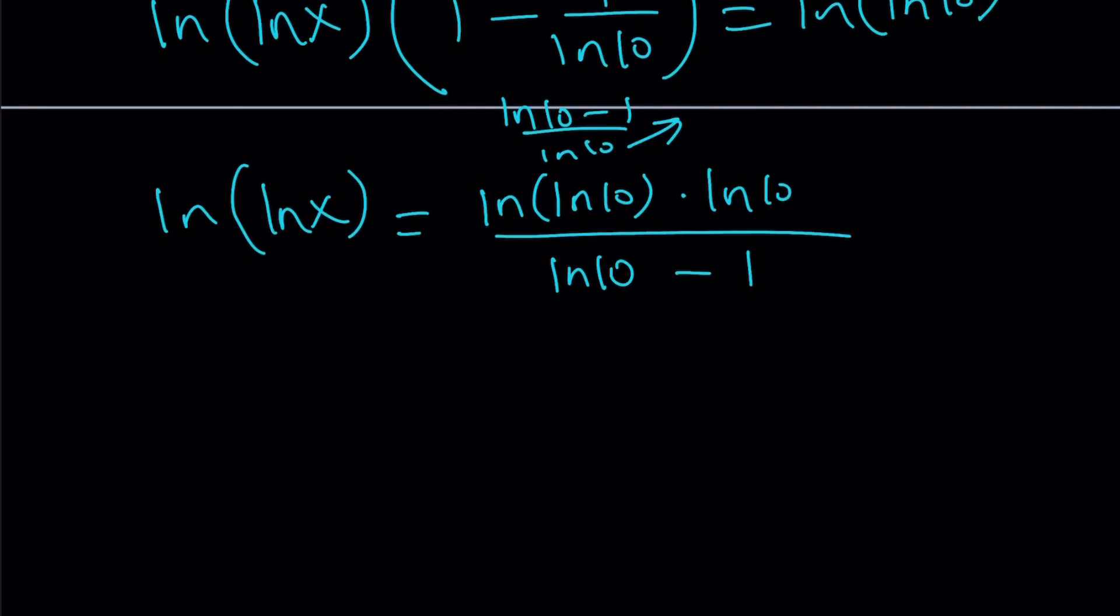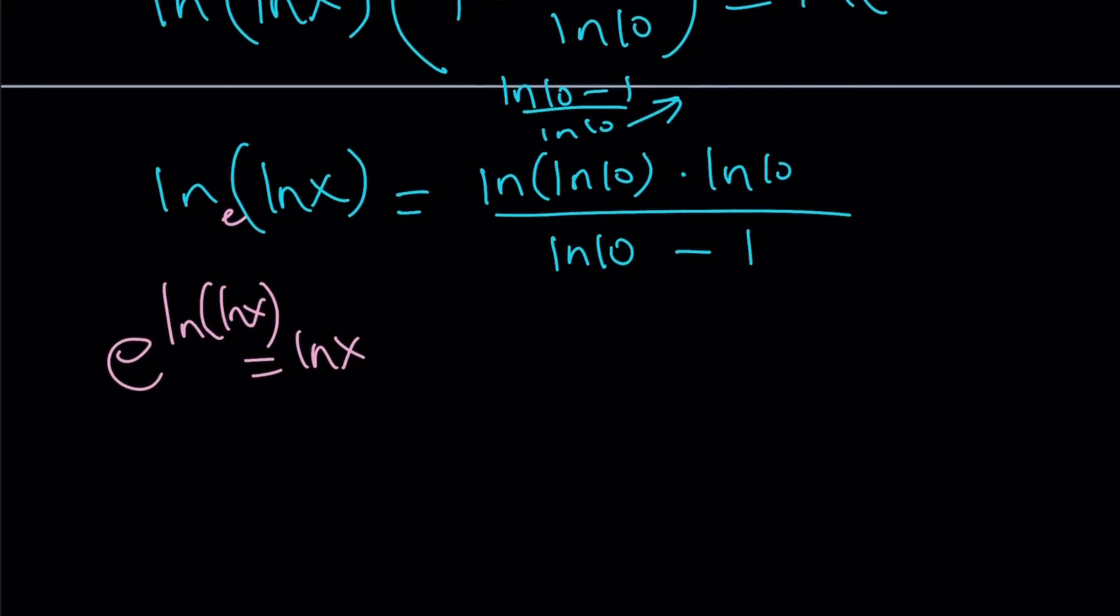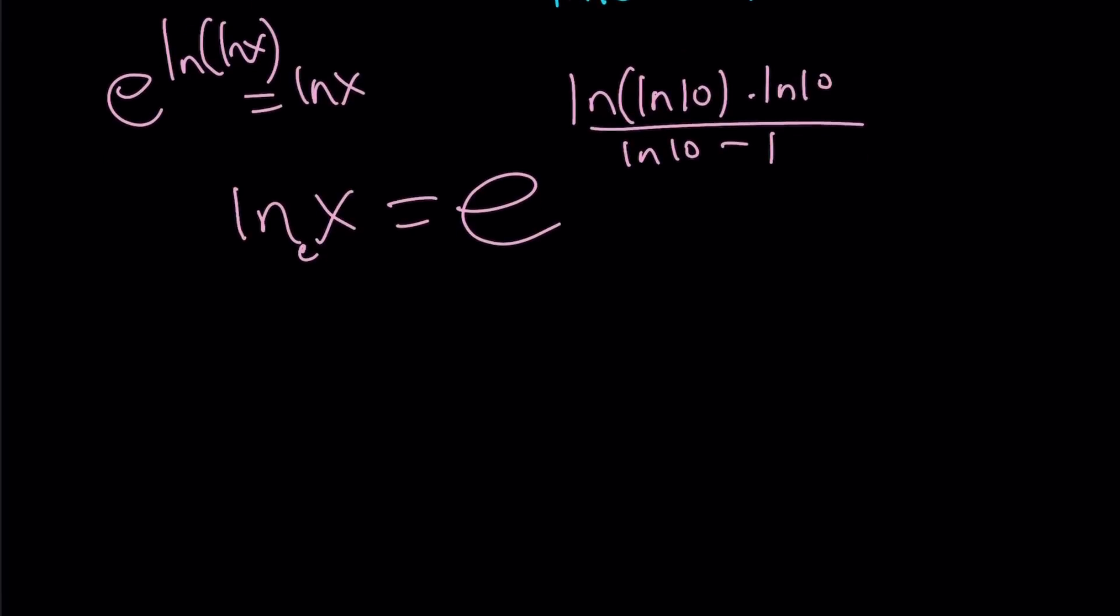So we have ln lnx. This is base e, remember? So you can actually do e to the power of both sides because e to the power ln lnx is lnx. And you have to do e to the power again. So e to the power of this, lnx is equal to e to the power of this. Again, I'm rushing. I should slow down. This is lnx. And since the base is e again, let's do e to the power one more time and we're going to get our weird, weird solution. It's like e to the power, e to the power, ln ln10 times ln10 divided by ln10 minus 1. And obviously, this can be simplified because e to the power of ln10 is 10, 10 to the power of something. But that's the solution and it works.